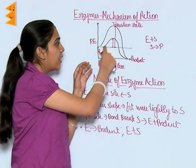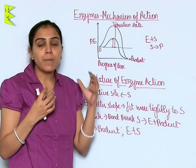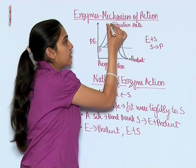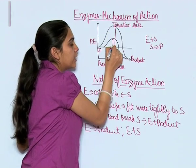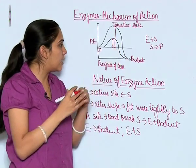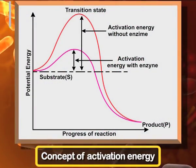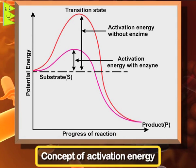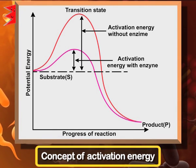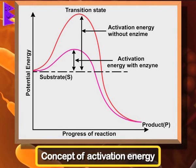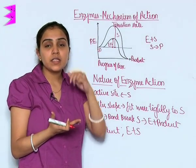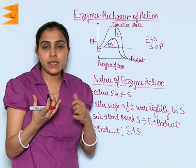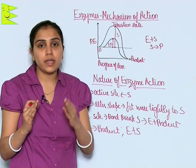The activation energy required for the substrate to be converted into product is much lower when an enzyme is present. Activation energy is measured from the transition state down to the level of the substrate. When the enzyme is bound to the substrate, the activation energy required is quite lower than when no enzyme is present. Hence, enzymes lower the activation energy required, thus helping in the rapid conversion of substrate into product.